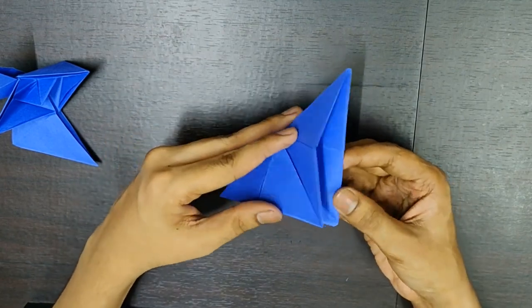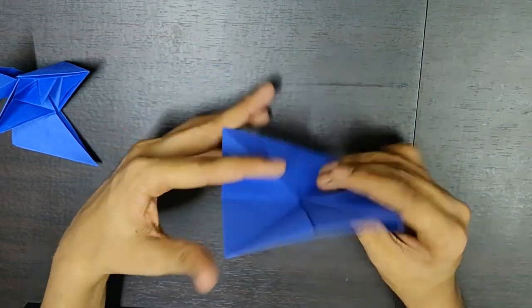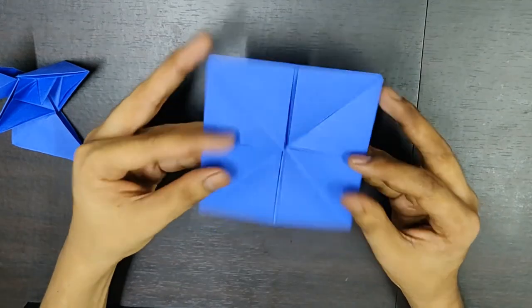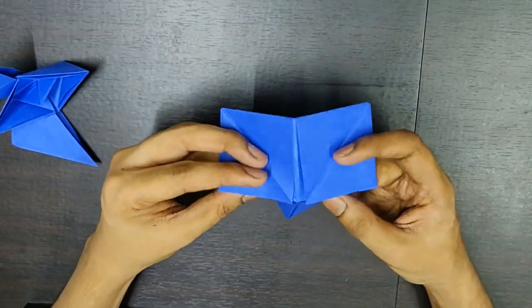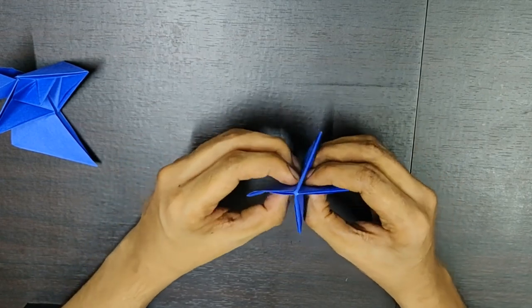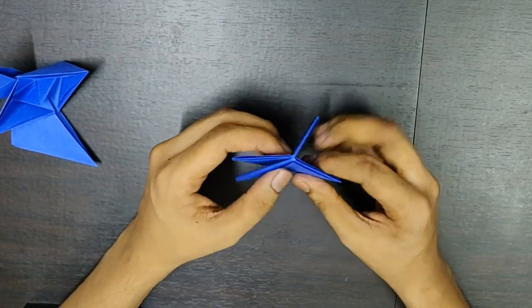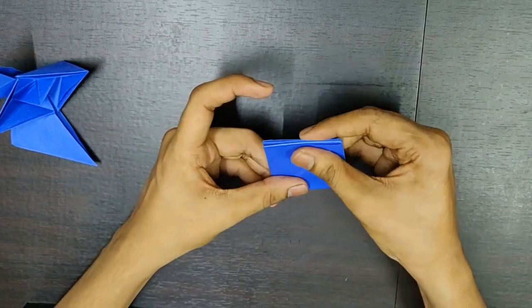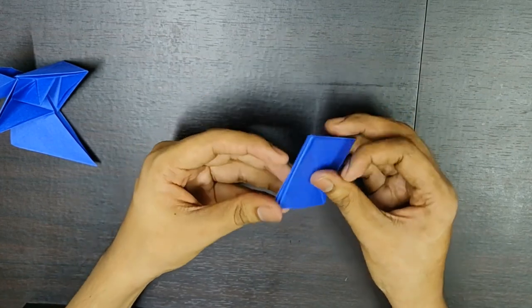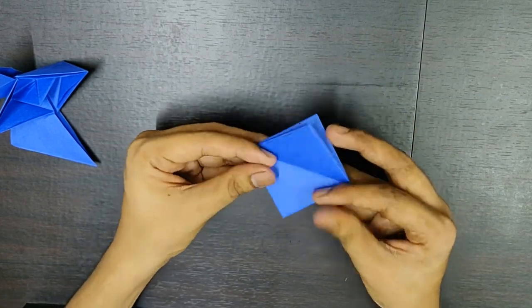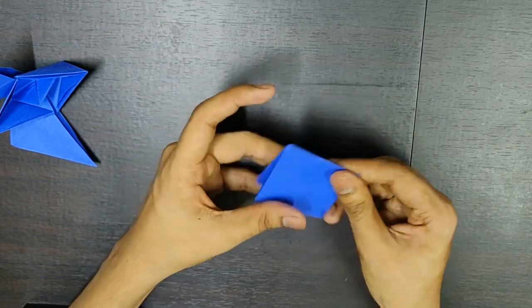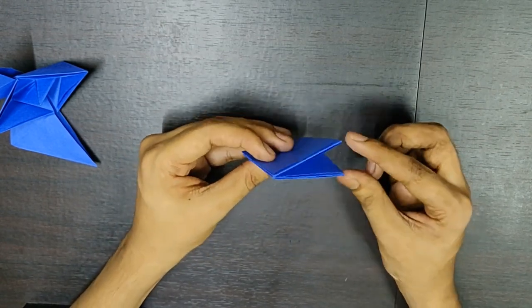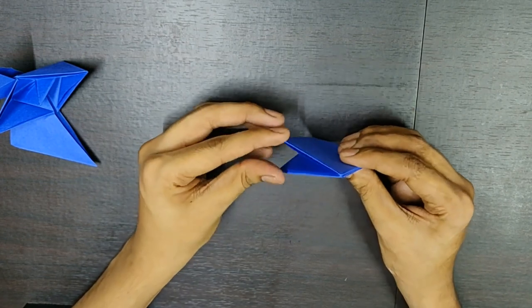Now, open this up. You can see something like this. Now, you need to fold it to form a diamond shape. Something like this. Just give it a shape. And have this folds properly so that we can fold it easily. You keep to this side and to this side.